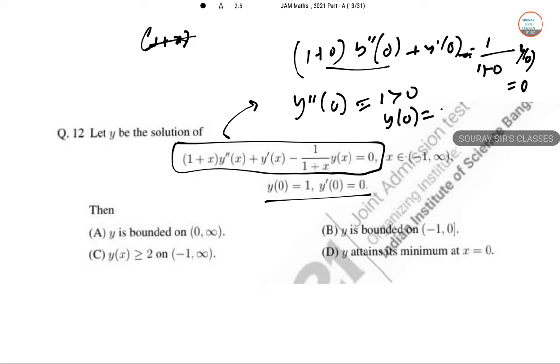That means Y(0) is also 1. So Y dash 0 is 0. So this is the point of minimum.